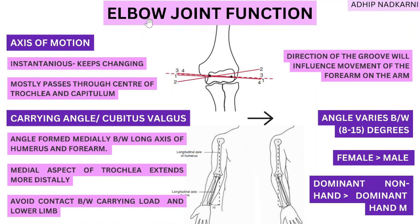Let's start with the axis of the elbow joint. As you can see, the elbow joint is a hinge type of joint, but after research they found out that it's not a pure hinge — it's more of a loose hinge joint. A pure hinge joint would have a stable axis, but the elbow joint has an instantaneous axis of motion, meaning the axis keeps shifting.